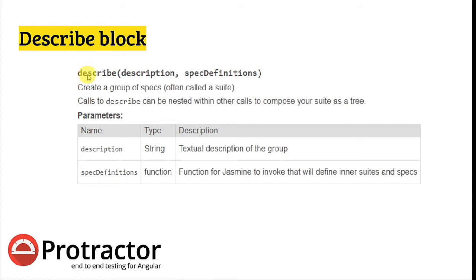The describe block's syntax requires you to write a description inside a single quote, then define a function. What it does is create a group of specifications, often called a suite. Every test case should be inside the describe block. Calls to describe can be nested within other calls to compose your suite as a tree, meaning you can use nested describe blocks to create a structured hierarchy. The parameters are: a description string and a function defining the specifications.